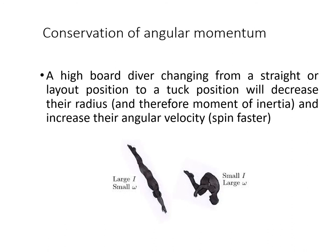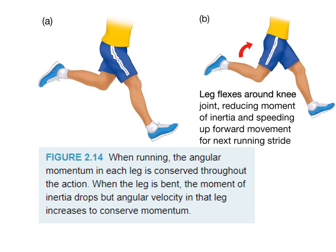The same concept applies with a different example: a runner's leg. We don't run with straight legs — we bend at the knee, and there's an interplay between moment of inertia and angular velocity as a consequence. Angular momentum is conserved throughout this action. When the leg is bent, the moment of inertia — the reluctance of the leg to rotate — is reduced, which increases angular velocity of the leg. So conservation of angular momentum applies to something as simple as running.